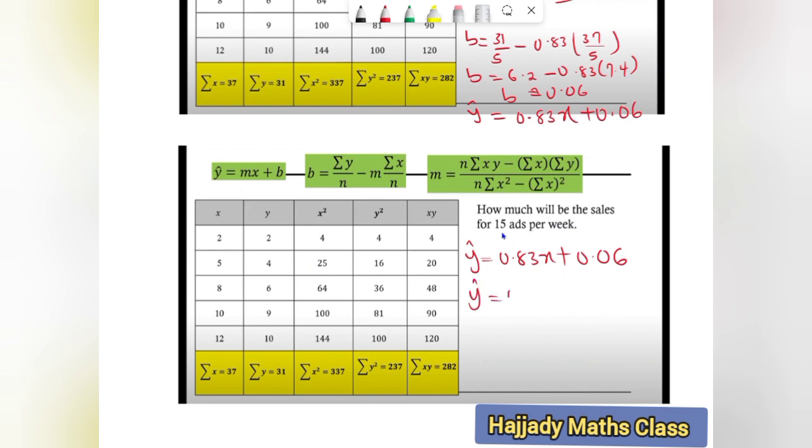So with this we can use this to predict. That is, y equals 0.83 times 15. If my x is 15, so we want to know the possible sales that we can make. My y hat is going to be 12.51, so this is the predicted sales.